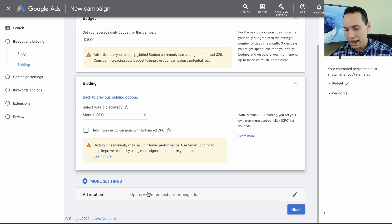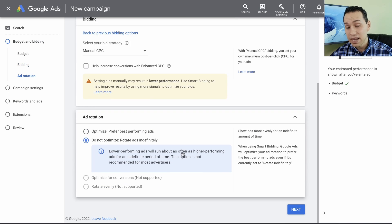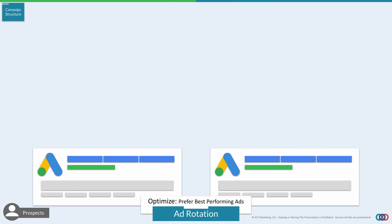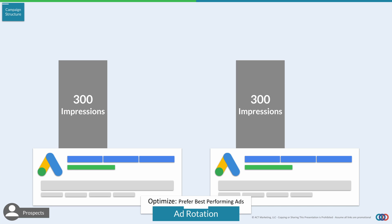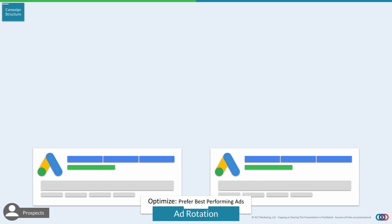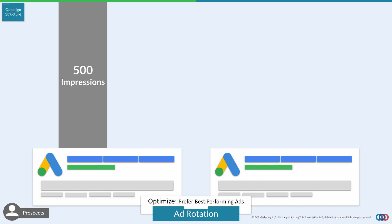We'll click on more settings, then ad rotation, and you're going to want to select do not optimize. This is really important. Here's why: let's say you come back in a week and your ads have gotten 600 impressions. With the option we just selected, ad number one gets 300 and ad number two gets 300. If one ad got 10 clicks and the other got two, it's easy to know which one worked better. But if you let Google rotate and optimize indefinitely, you might come back and find one ad got 500 impressions and the other only got 100. How are you supposed to figure out which one worked better? You can't. That's why you need do not optimize — so you can come back and see which ads are actually working and improve, rather than turning all control over to Google.